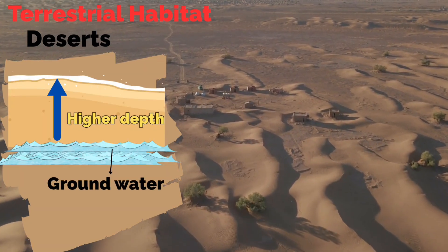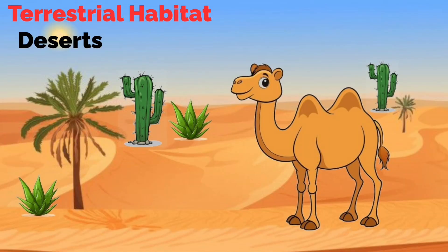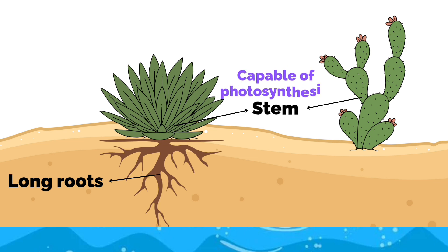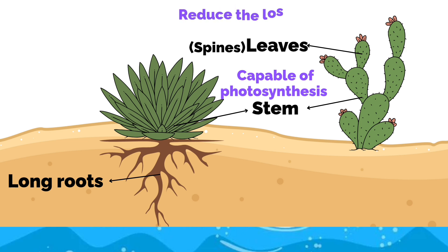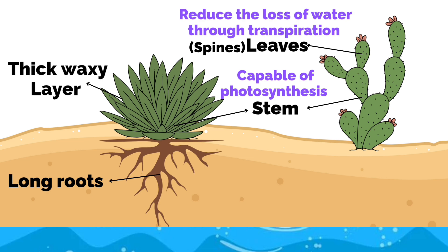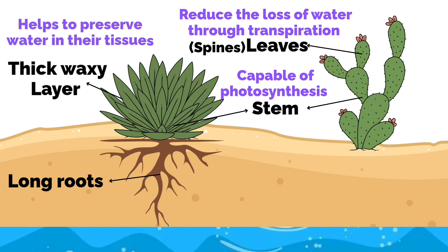The biotic factors include different animals and plants. The plants have long roots in order to reach the ground water. The plants have a green stem capable of photosynthesis. Leaves are generally absent, and if present, they are very small or in the form of spines. This helps to reduce the loss of water through transpiration. There is a thick waxy layer on the stem which helps to preserve water in their tissue.